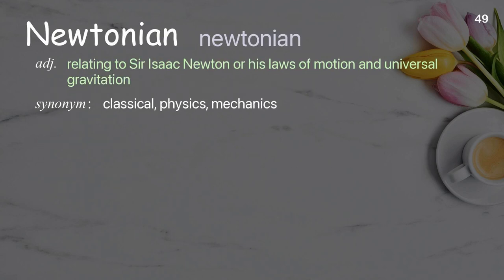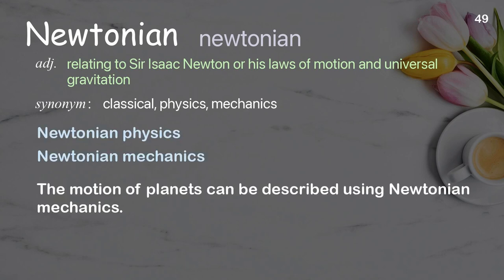Newtonian. Relating to Sir Isaac Newton or his laws of motion and universal gravitation. Examples: Newtonian physics, Newtonian mechanics. The motion of planets can be described using Newtonian mechanics.